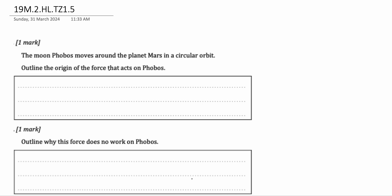The moon Phobos moves around the planet Mars in a circular orbit. Outline the origin of the force that acts on Phobos. Now let's visualize this situation. You have a mass which is Mars in this case, and you have a moon which is orbiting Mars, meaning it's in circular motion around Mars.